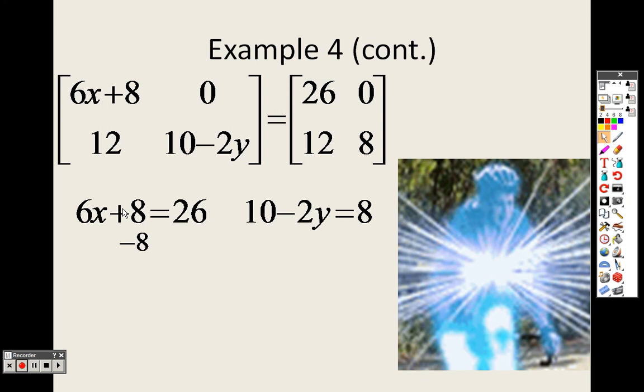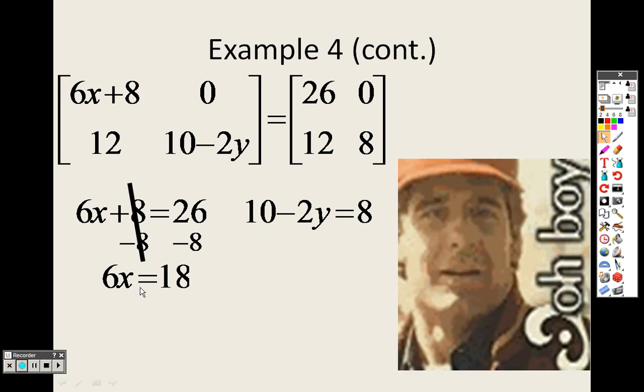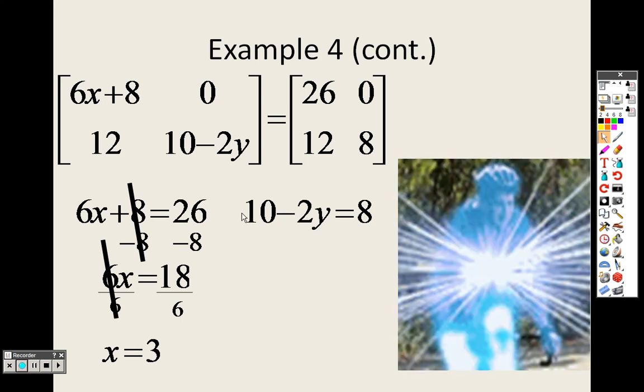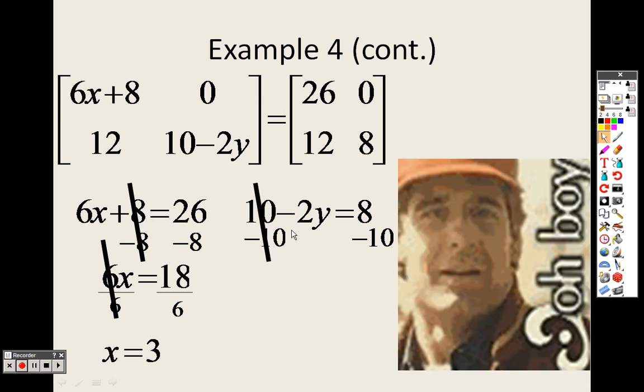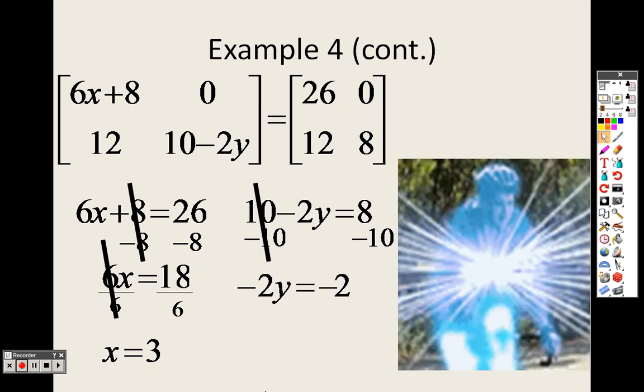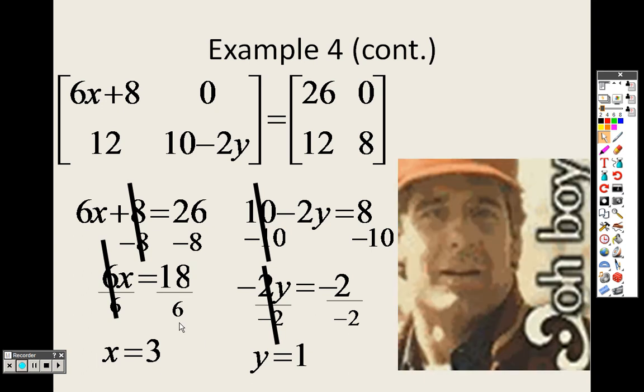So to solve this, since it's a plus 8, I will subtract 8 to both sides. The 8's crossed out, leaving me with 6x equals 18. I can divide both sides by 6 and get x equals 3. Over here, I want to solve for y, which means I've got to get rid of the 10. So since that is a positive 10, I will subtract 10 on both sides. I get negative 2y equals negative 2. If I divide both sides by negative 2, I'll get y equals 1. So basically, I solved each equation for x and y using the matrices doing everything step by step.